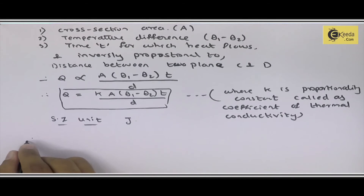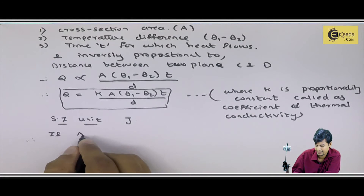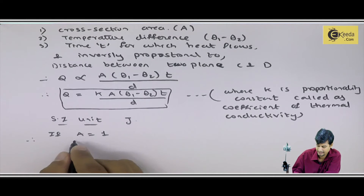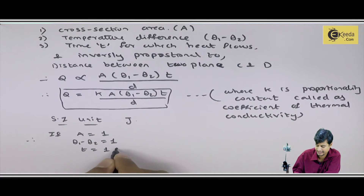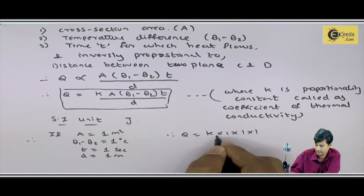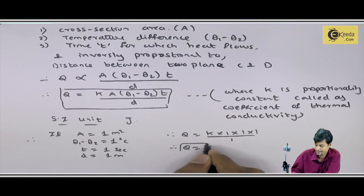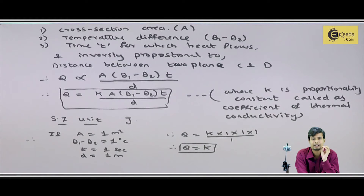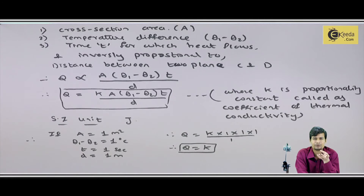Now if we want to find K — that is, the thermal conductivity — if we set A equal to 1, theta 1 minus theta 2 equal to 1 degree Celsius, and T equal to 1, then the heat produced equals the thermal conductivity K. So both sides become equal.